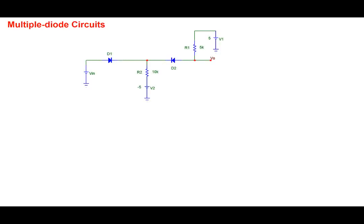There are circuits containing multiple diodes whose analysis becomes interesting and involved. Consider a circuit with D1, D2, a voltage V2 = −5V, a 10kΩ resistor, V1, a 5kΩ resistor, and we want the relationship between V0 and Vn. When we have multiple diodes the issue is whether each diode is forward or reverse biased. With two diodes there are four possibilities: both reverse biased, D1 forward and D2 reverse, D1 reverse and D2 forward, or both forward biased.